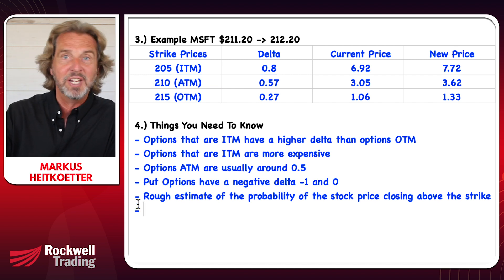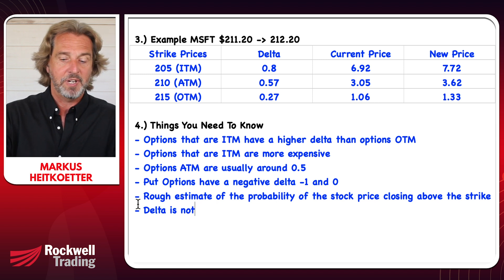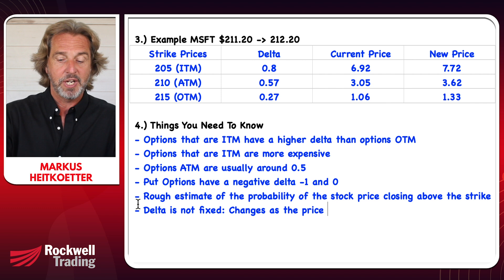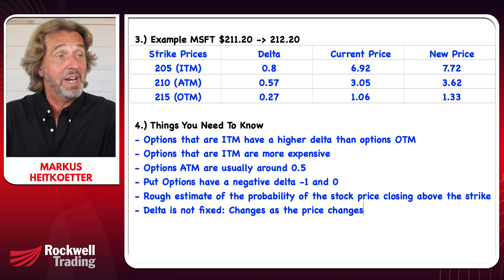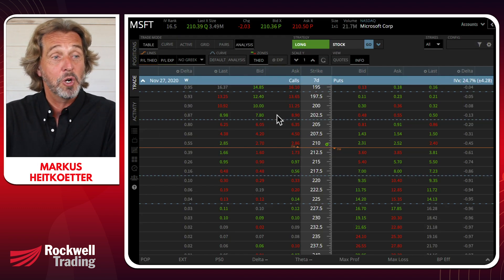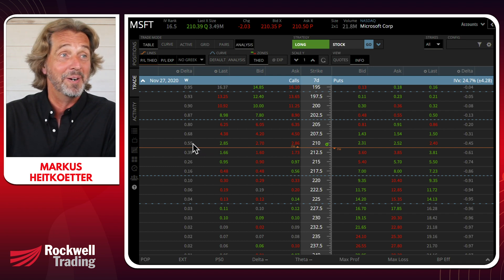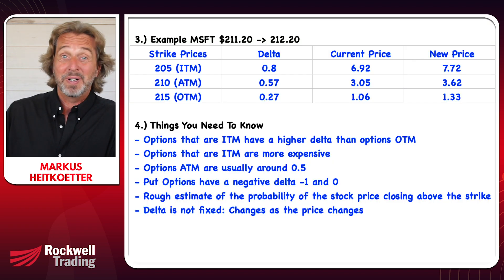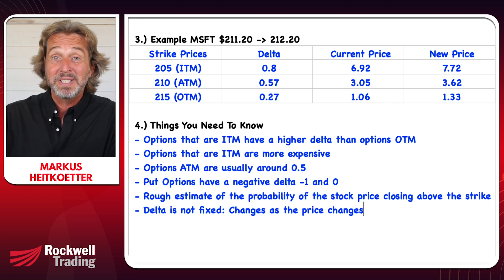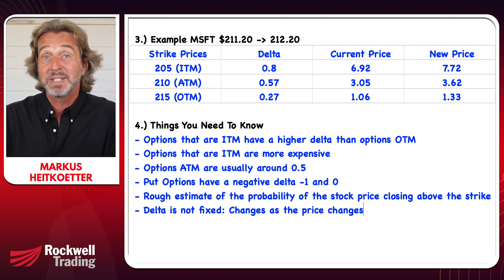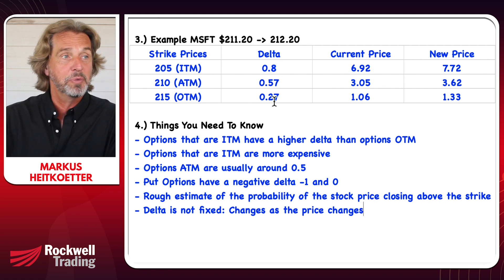Here's a tricky thing: delta is not fixed. Delta changes as the price changes. For example, if Microsoft goes up to 215, the 210 strike is now deeper in the money, and therefore its delta will be higher. Now you know what delta is, how it influences the option price, and why it's important when you are trading options.